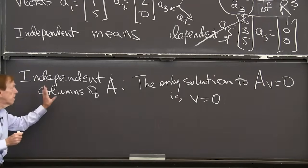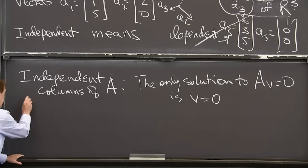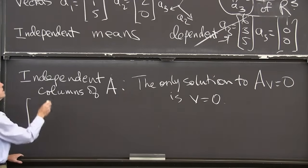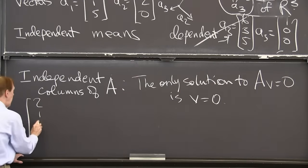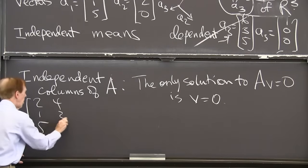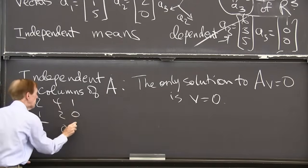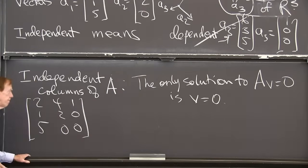So that's, this is, let me write down that example again. A was the matrix 2,1,5, 4,2,0, 1,0,0. So I believe that matrix has independent columns.